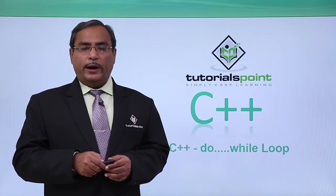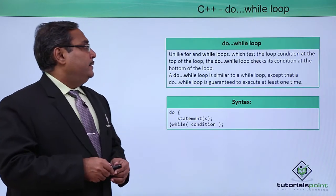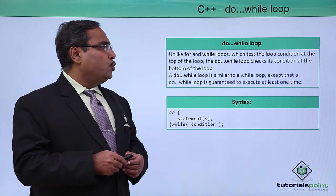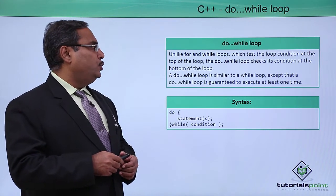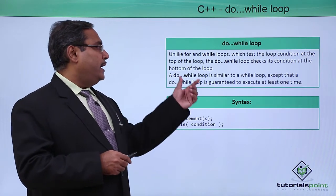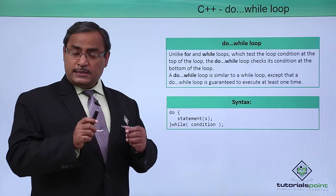C++ do-while loop. Unlike for and while loops which test the loop condition at the top of the loop, the do-while loop checks its condition at the bottom of the loop. That is the main difference.